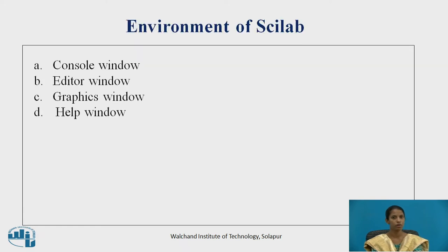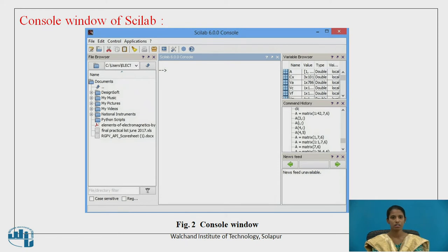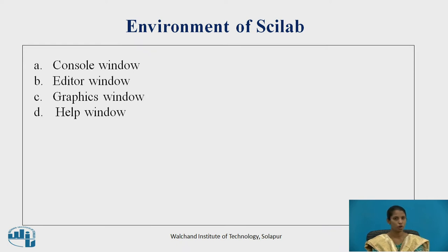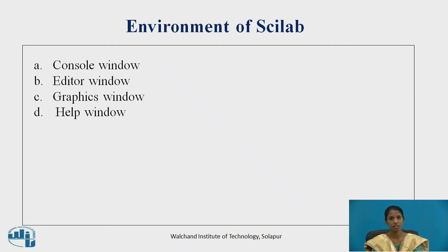Let's see the environment of Scilab. Scilab consists of mainly four windows: Console window, Editor window, Graphics window, and Help window. The Console window is a window for calculation work. The Editor window is used to write programs. The Graphics window is used to plot graphs — when you want to plot a graph, a new window pops up where you can see the graph. In the Help window, you can ask queries you face during Scilab operations, and there is also an offline mode available.